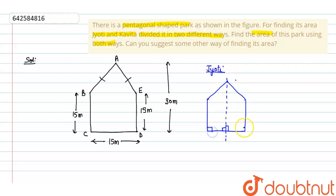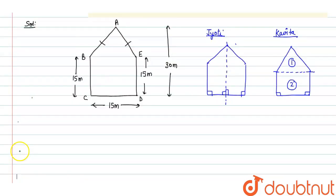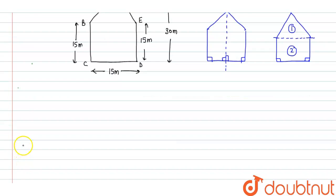To find the area according to Kavita, he is saying he will find the area by constructing a line here, so the figure will become into two parts: first is a triangle, second is a square. Now let's see that in both methods, can they get equal areas. So come to the solution.